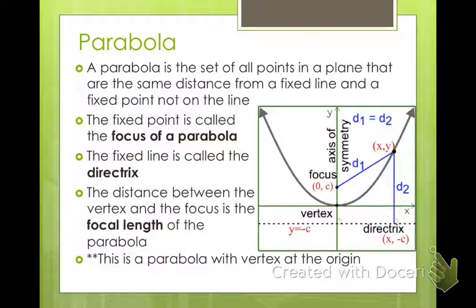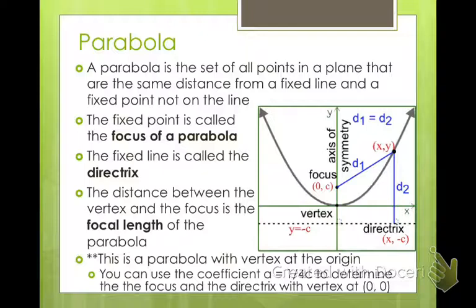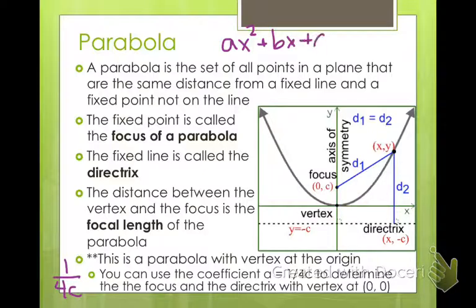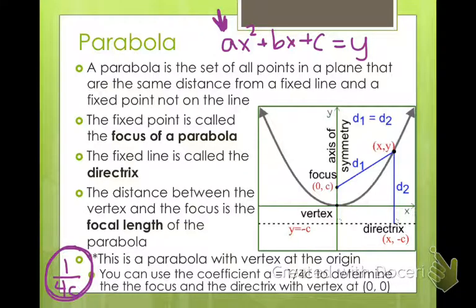This particular parabola has a vertex at the origin. If you're trying to find your focal length, or generate an equation given a focus, you use the formula 1 over 4c — this is what our a value is. So if you remember when we talked about parabolas before, it was ax² + bx + c. This a value is 1 divided by 4 times your focal length, the distance from vertex to focus.